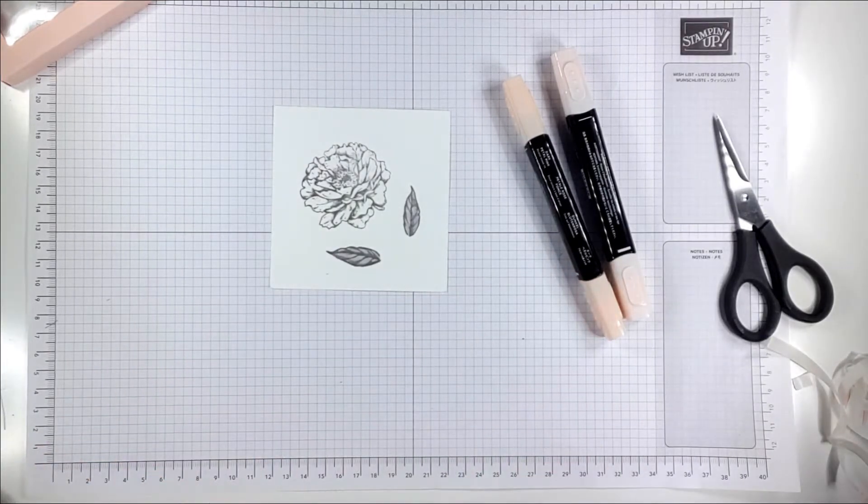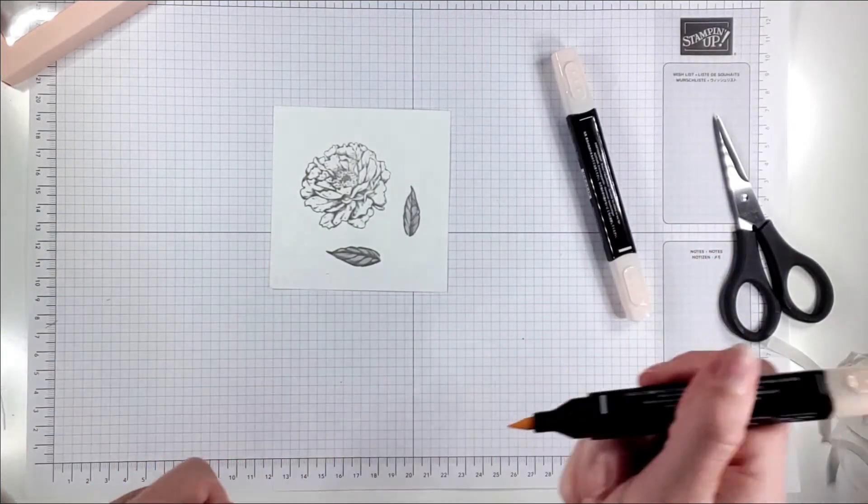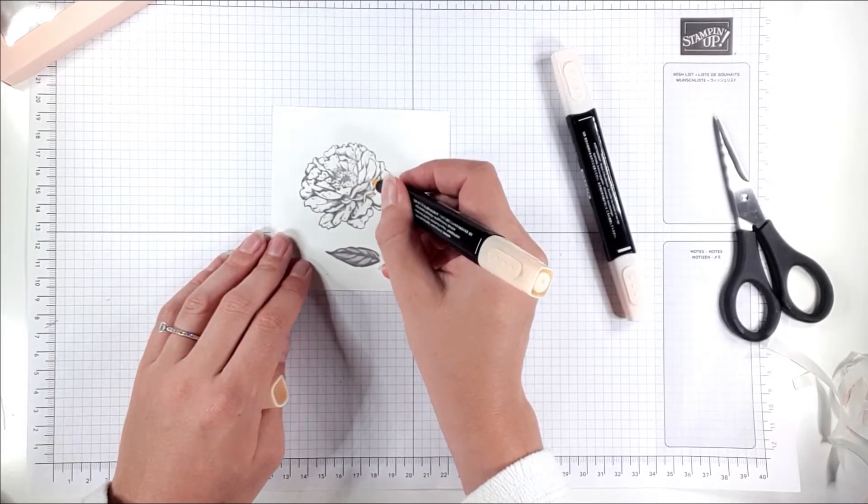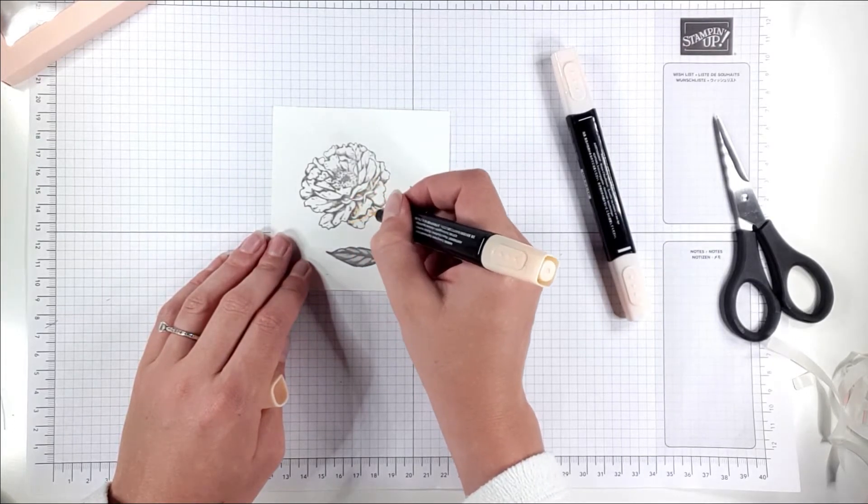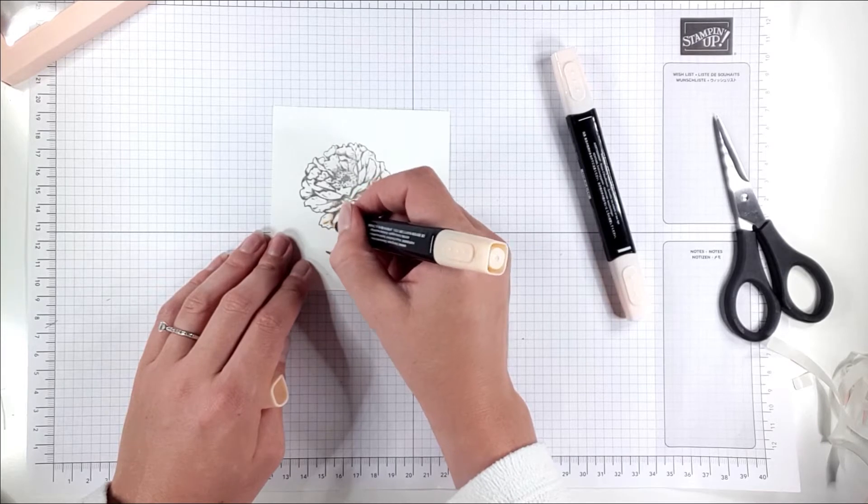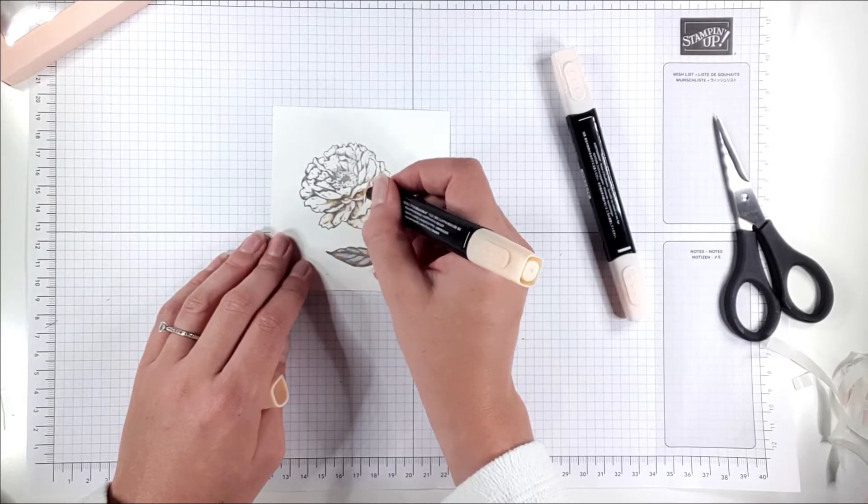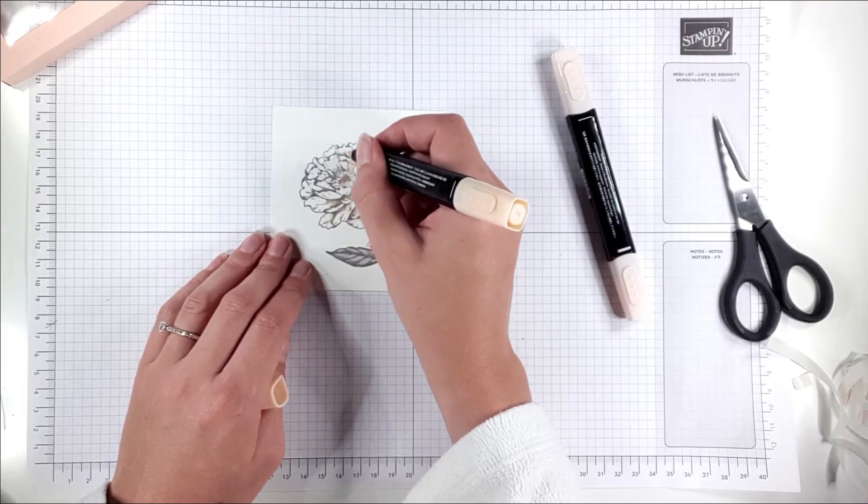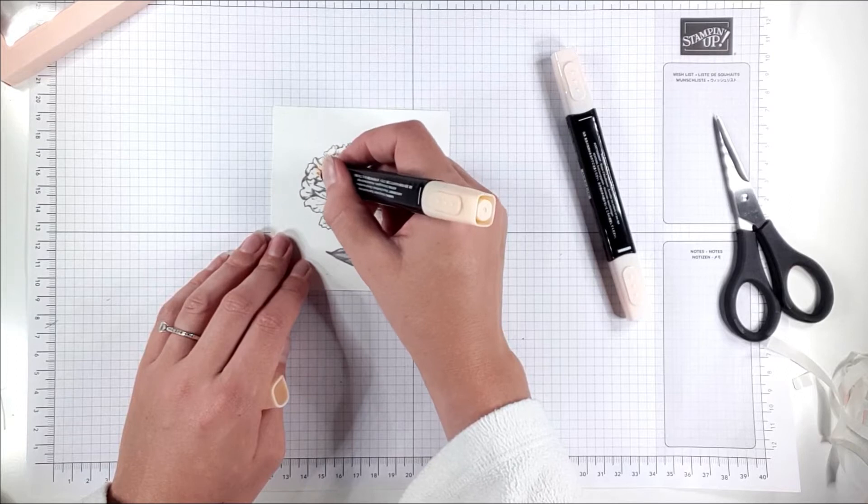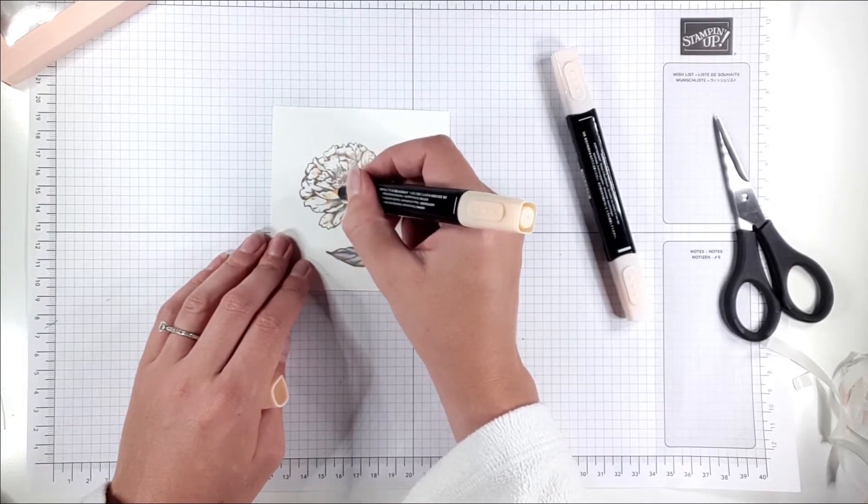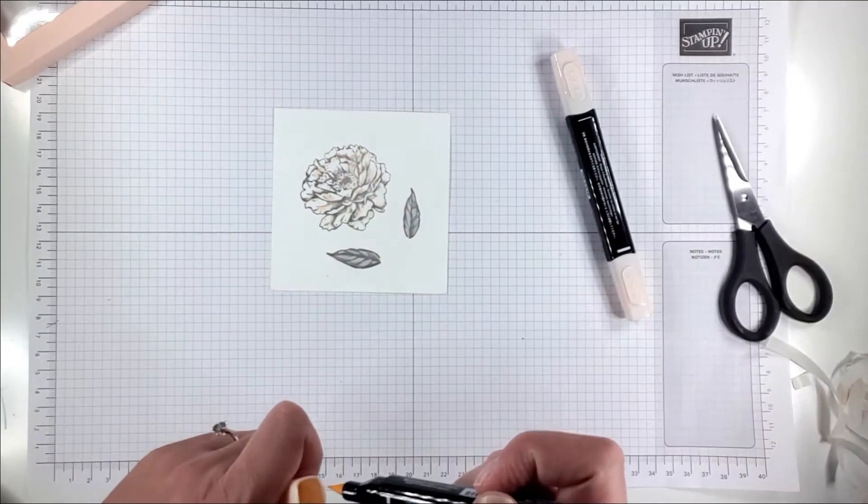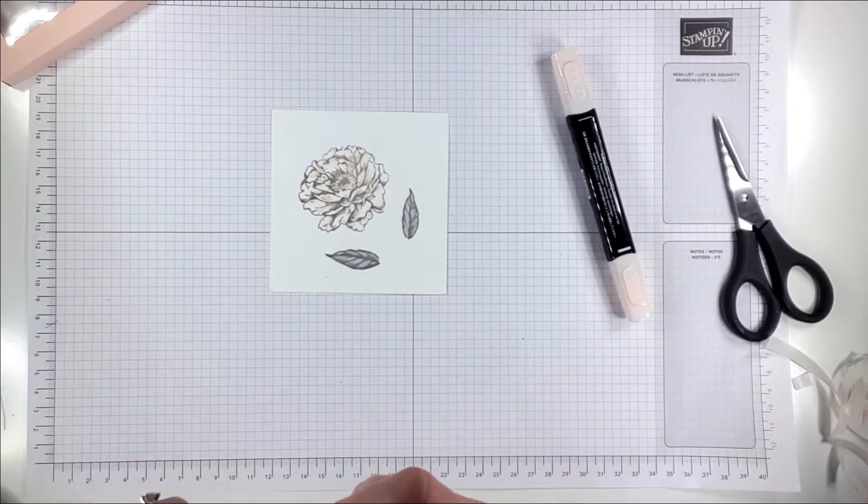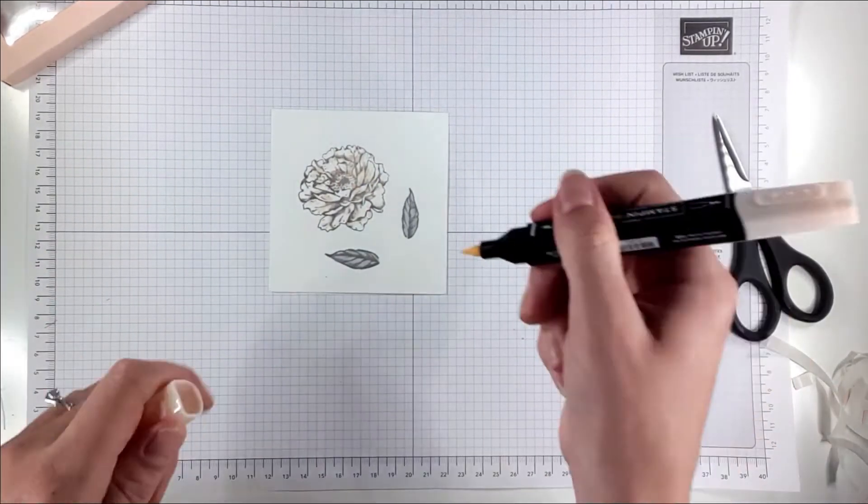Then with the peony I'm going to take the darker of the dark petal pink and I'm just going to colour in on the dark bits of the flower on the image. On this kind of image the actual stamp really helps you. Now I'm just going to colour over with the light colour.